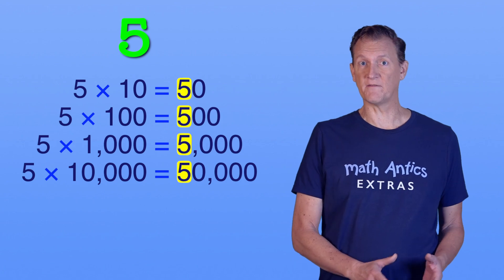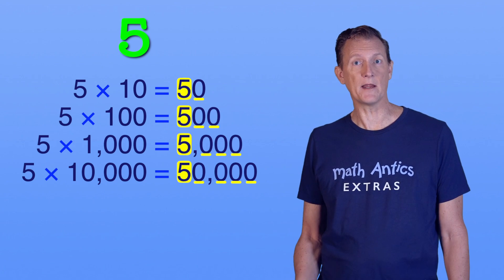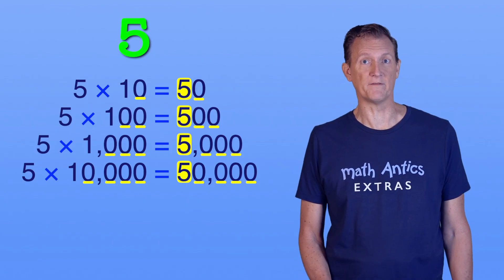Do you notice anything about these numbers? They're all just the digit 5, with different numbers of zeros after them. The number of zeros they have is the same number of zeros there were in the power of 10 we multiplied the 5 by.